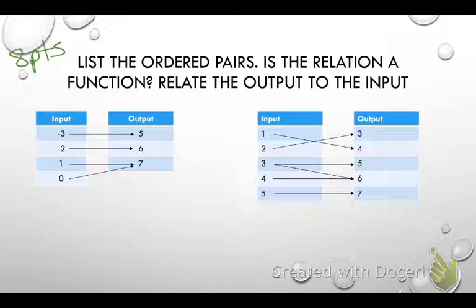Is it a function? Let's list the ordered pairs. Let's say them together. For the first one: negative 3, 5; negative 2, 6; 1, 7; and 0, 7. Is it a function? Yes, it's a function. Each input has one output.